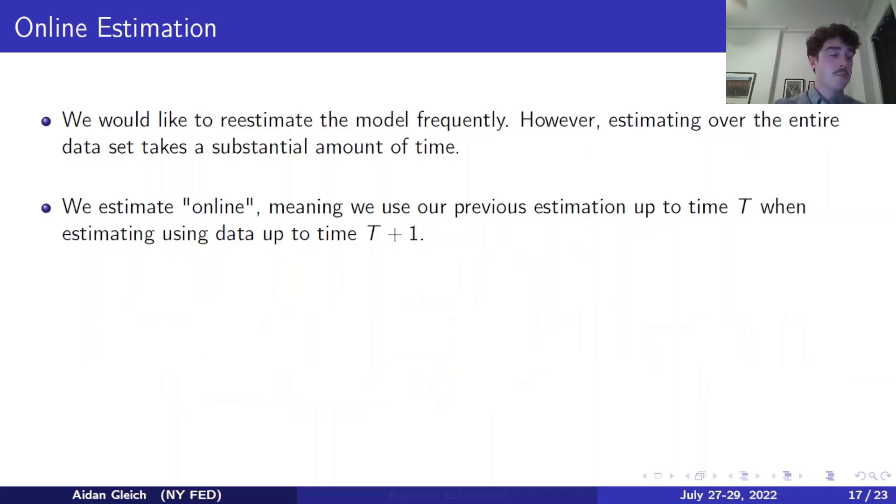To go back to online estimation, the motivation for online estimation is that we would like to estimate our model frequently. However, estimating DSGE models takes quite a bit of time, especially if you are estimating over the entire dataset. By estimating online, what we mean is that we're going to use our previous estimation up to time t as the prior of our estimation using data up to time t plus 1. So we don't have to completely redo the estimation over the entire time period. We only have to do the estimation over a much, much smaller time period. And of course, it doesn't have to be t and t plus 1. It could be t and t plus 5 or t and t plus 10. But the point is that we are using a previous estimation in the prior of a current estimation to increase efficiency.